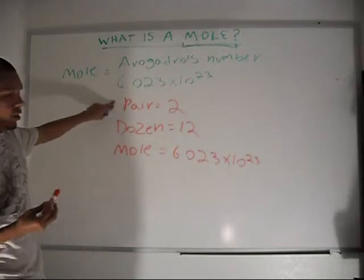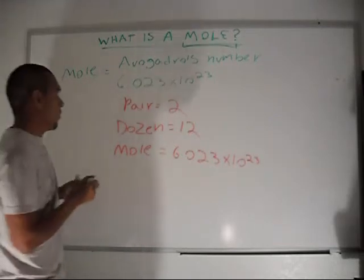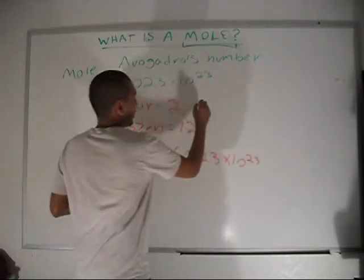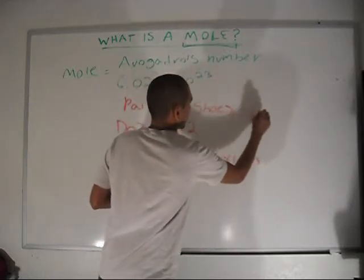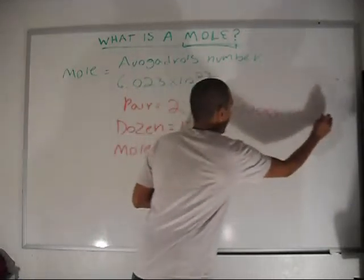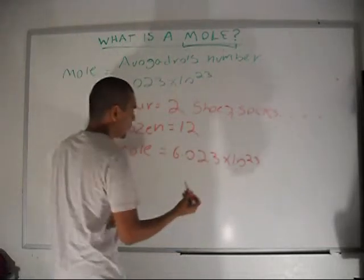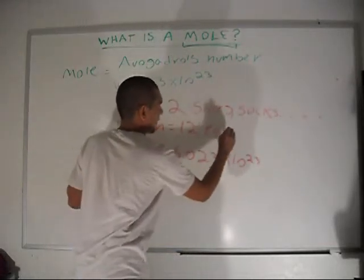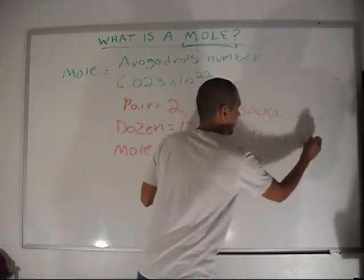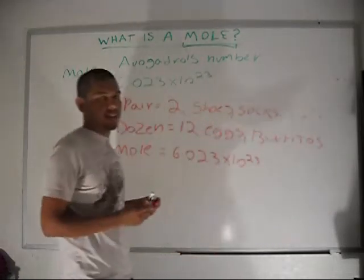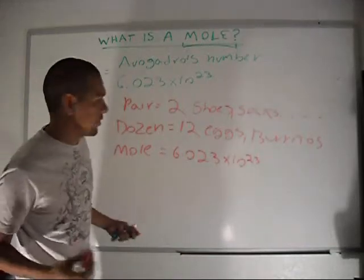Now, when can we use the word pair? Well, when we're referring to something like shoes, socks. What about a dozen? We're referring to something like eggs, burritos. I don't know if you can eat a dozen of burritos. I can't.